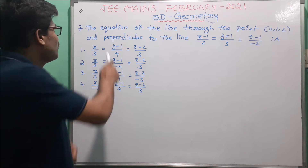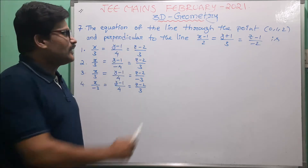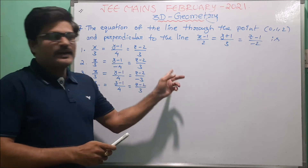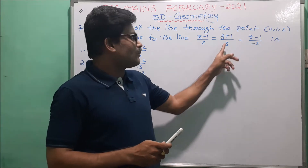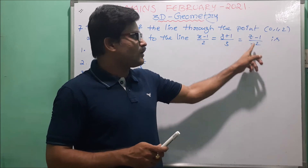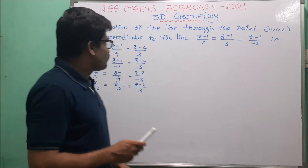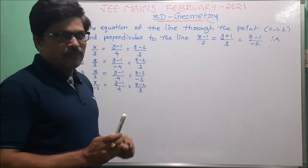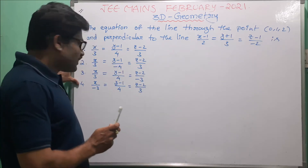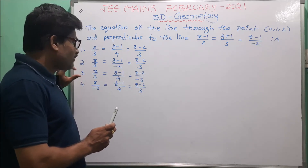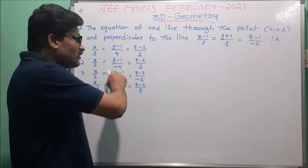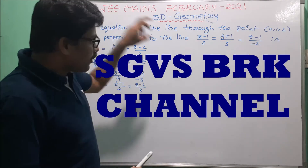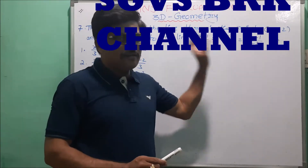The equation of the line through the point (0, 1, 2) and perpendicular to the line x minus 1 by 2 equal to y plus 1 by 3 equal to z minus 1 by minus 2. Here, to find the equation of the line which is in symmetric form, we observe the given options. These options are equations of lines in symmetric form. In the problem also, the given line is in symmetric form.